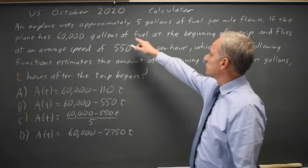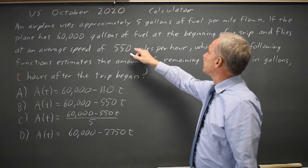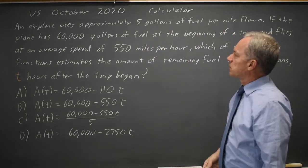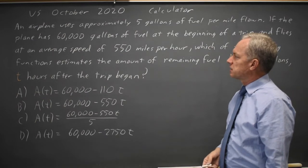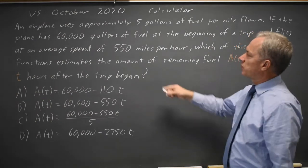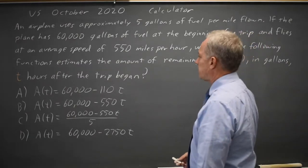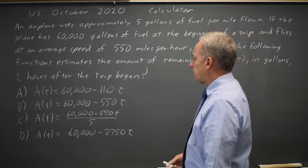The College Board describes fuel consumption for an airplane, 5 gallons per mile, and the plane starts at 60,000 gallons of fuel and flies 550 miles per hour. And they want the amount of fuel remaining after T hours.